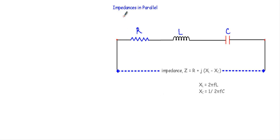In this video I will show you how we reduce several impedances when they are connected in parallel to a single impedance, which is known as the equivalent or total impedance of that circuit.